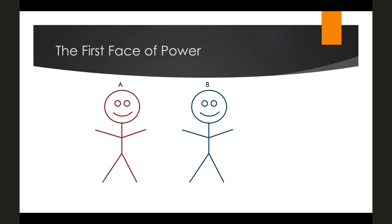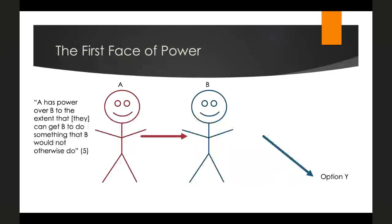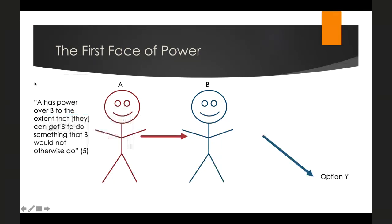We can imagine two people, A and B. Right now B has a preference for option X — this can be anything from a particular policy decision to something more personal, like wanting to see movie X instead of movie Y. The first face of power exists when A influences B's behavior such that B pursues option Y against their original interest. The quick definition: A has power over B to the extent that A can get B to do something B would not otherwise do.